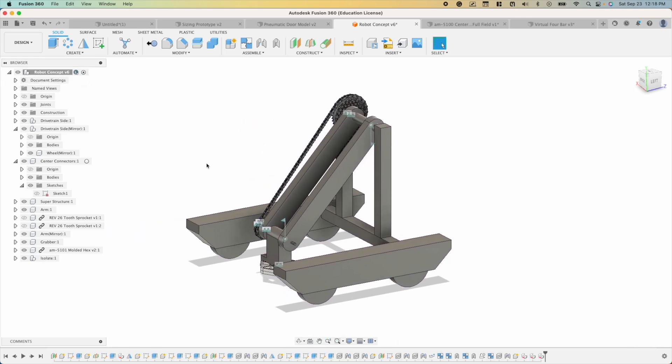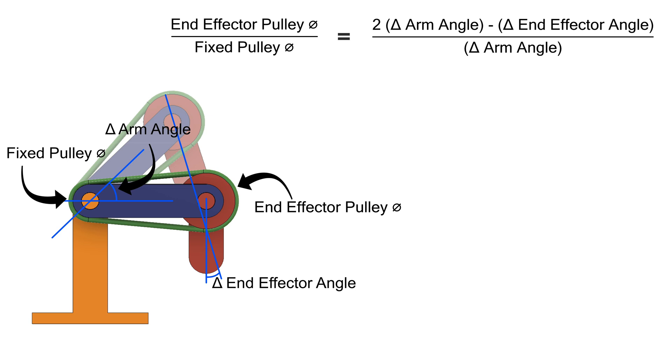Here you'll see the ratio of the two gears is equal to two times the change in the arm angle minus the change in the end effector angle, all divided by the change in the arm angle, where all these measurements are taken in reference to the robot frame.